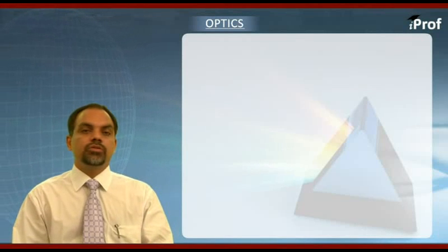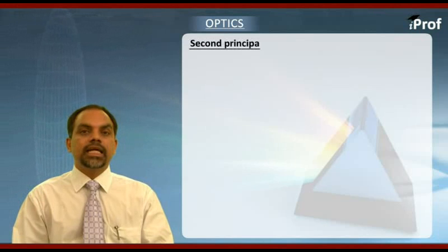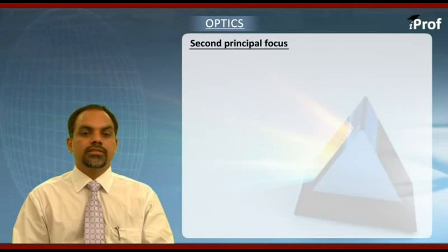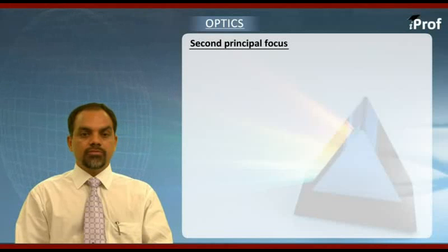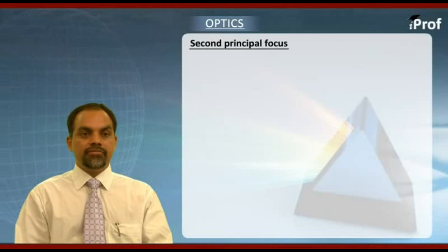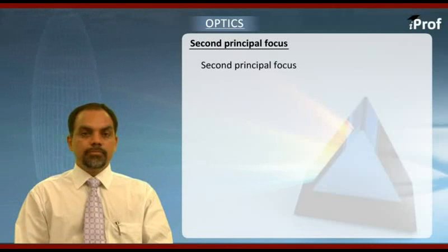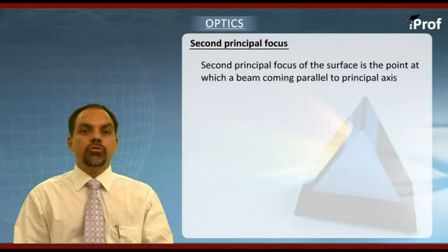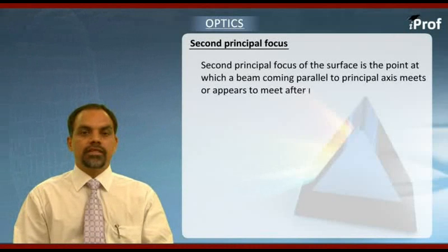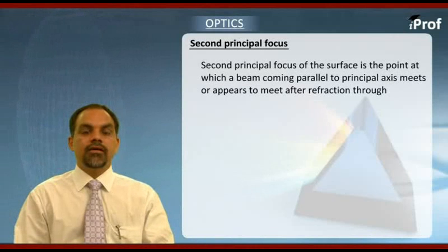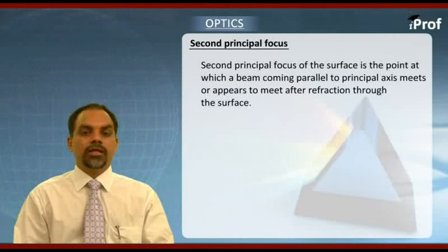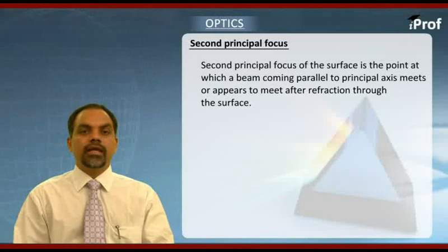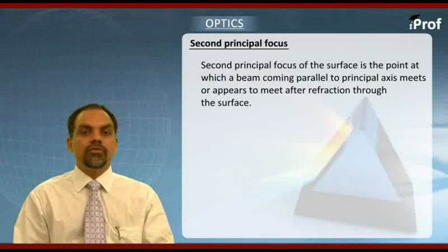We go to the definition of second principal focus, which we are going to denote it by capital F2. It is simply defined as a point to which rays parallel to principal axis converges, or a point on optical axis from where rays appear to come. That is called second principal focus.